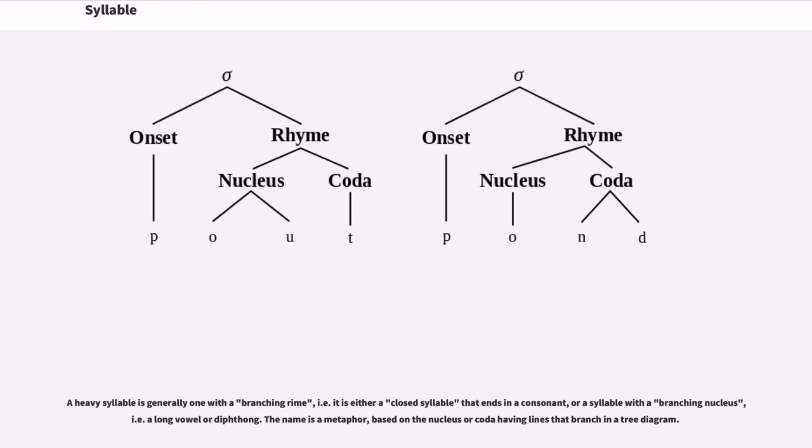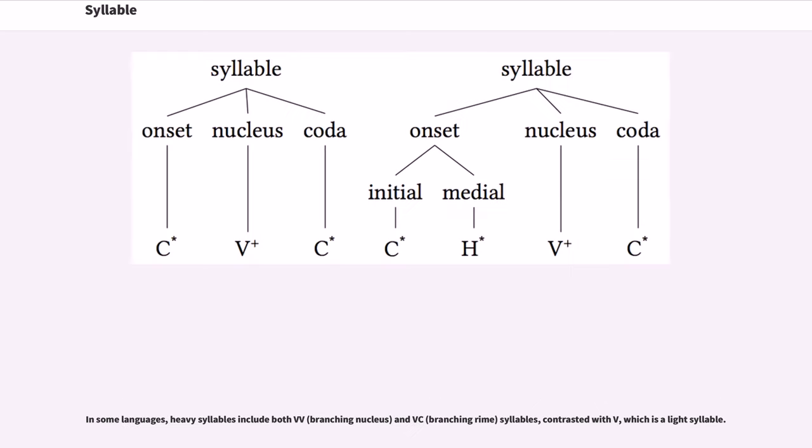A heavy syllable is generally one with a branching rhyme, i.e. it is either a closed syllable that ends in a consonant, or a syllable with a branching nucleus, i.e. a long vowel or diphthong. The name is a metaphor, based on the nucleus or coda having lines that branch in a tree diagram. In some languages, heavy syllables include both VV and VC syllables, contrasted with V, which is a light syllable. In other languages, only VV syllables are considered heavy, while both VC and V syllables are light.